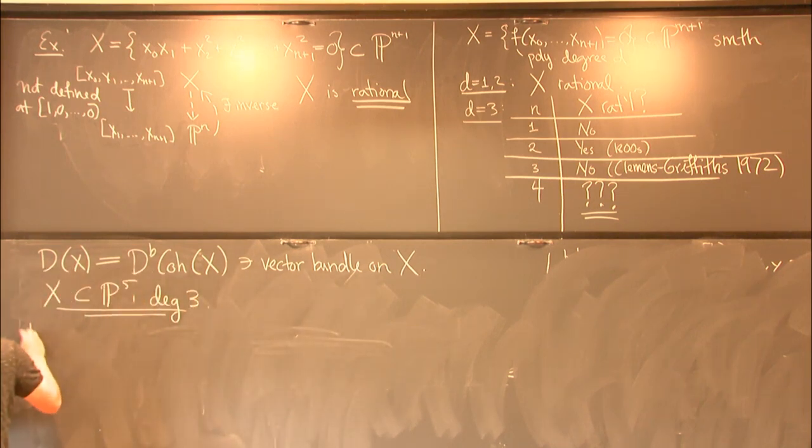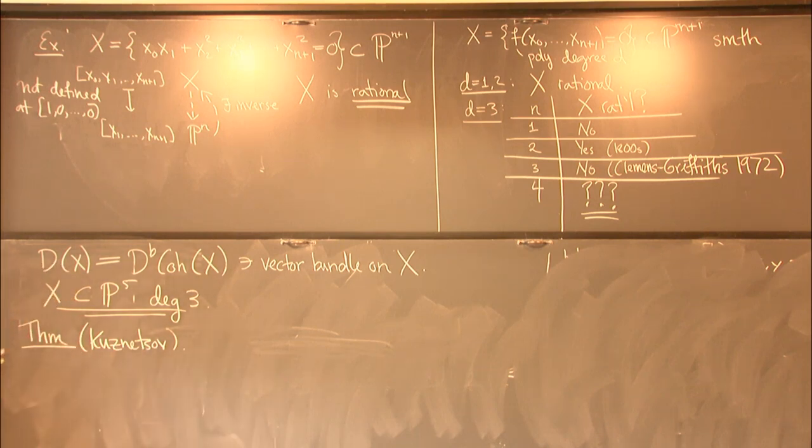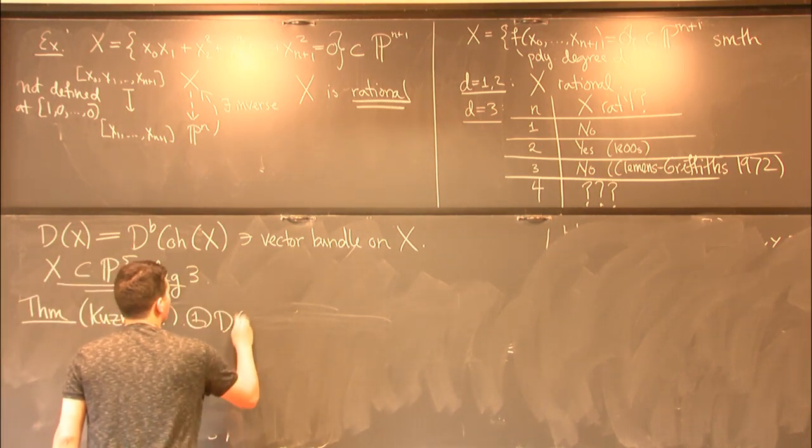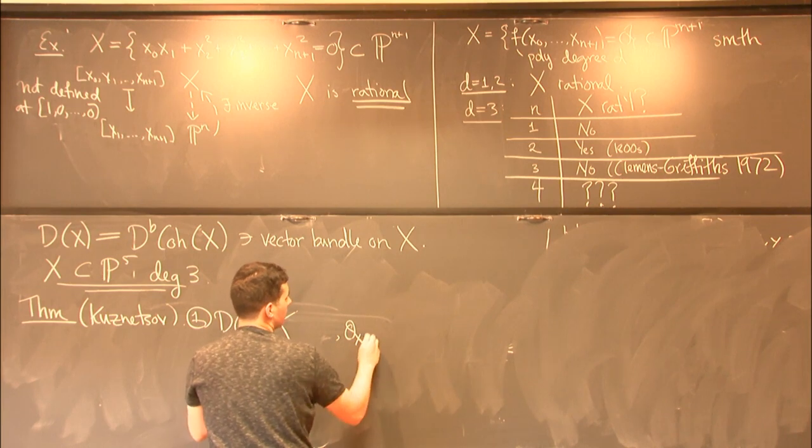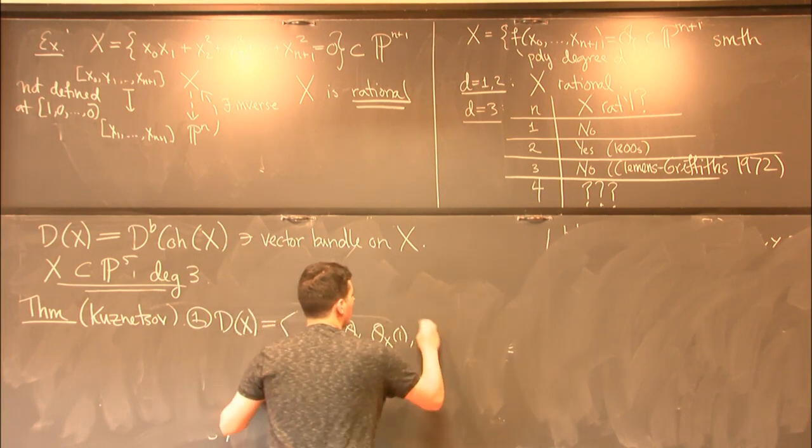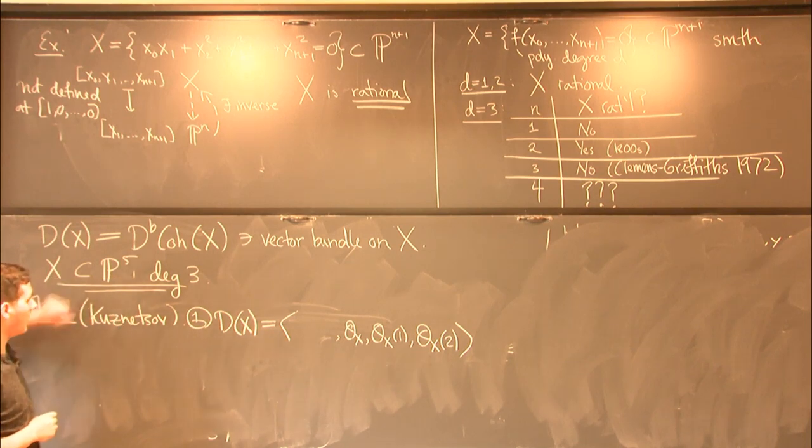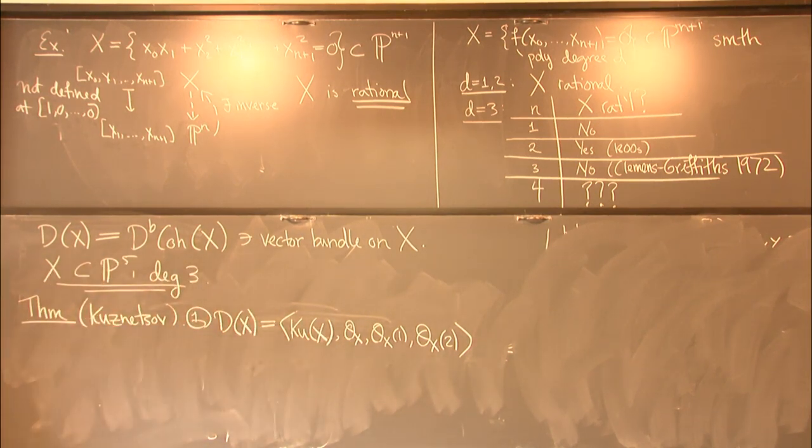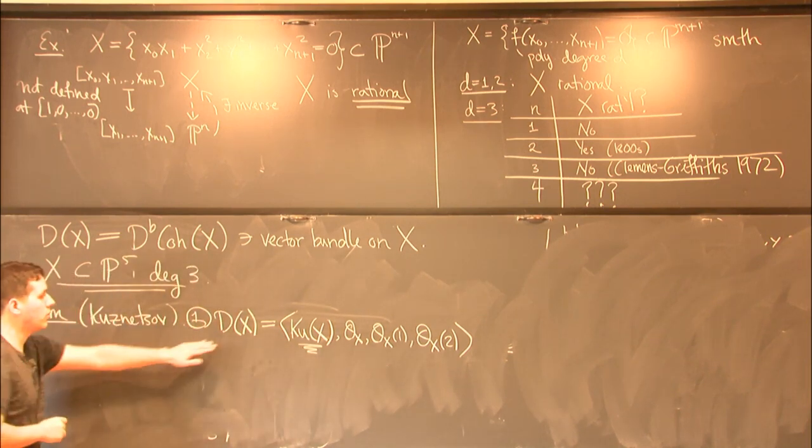sort of motivating theorem about the derived categories of these things. This is a theorem by Kuznetsov. So the first part of this theorem says that this derived category has a nice decomposition. So technically it's called a semi-orthogonal decomposition. And it looks as follows. So there's a copy of the trivial line bundle. And then there are two line bundles which are just the restrictions of certain tautological bundles on this projective space to x. And then there's another, the really interesting piece, I'll call it Q of x for Kuznetsov. And in an appropriate sense it's the orthogonal to those other three objects. But the precise definition isn't super important for this talk. The important thing is there's some canonical subcategory Q of x inside of D of x. And it has the following property.